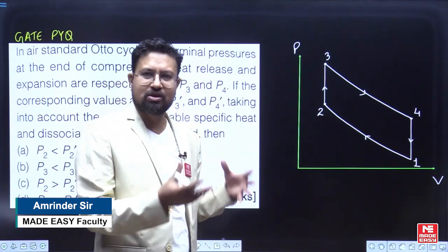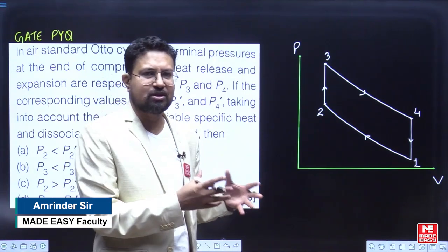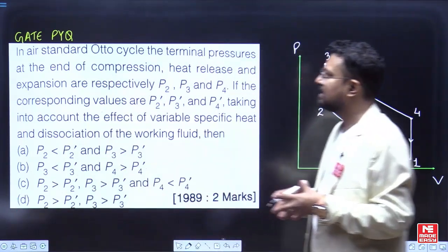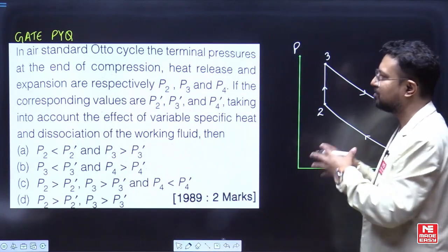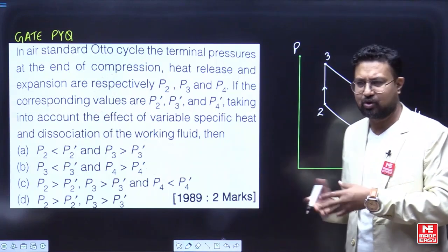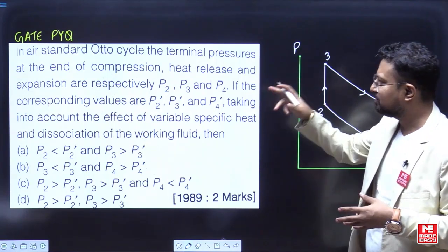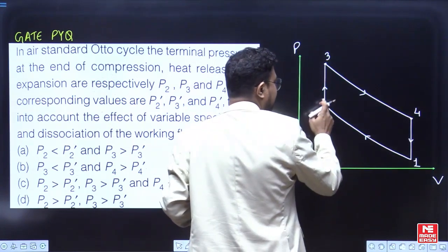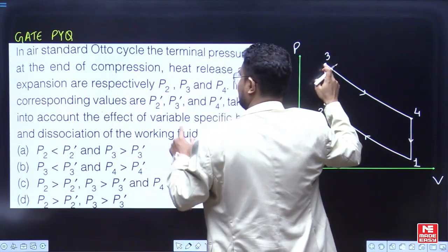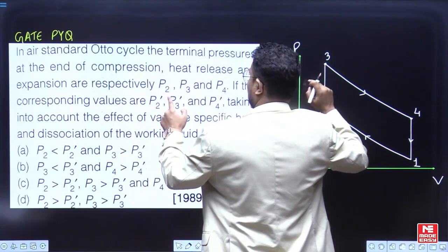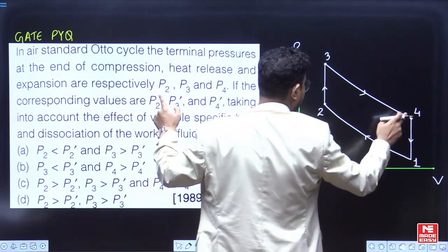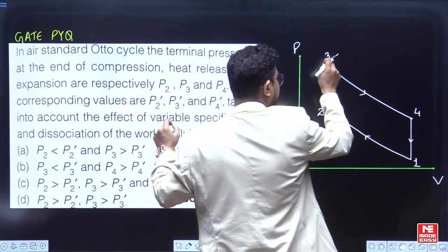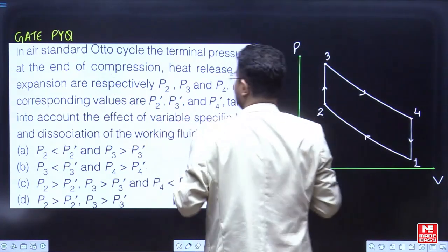The Otto cycle has two constant volume processes and two adiabatic processes. The question states: in an air standard Otto cycle, the terminal pressures at the end of compression, heat release, and expansion are p2, p3, and p4. The corresponding values taking into account variable specific heat are p2', p3', and p4'.